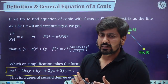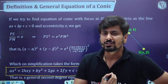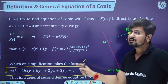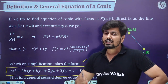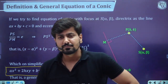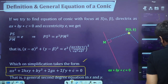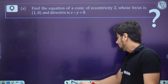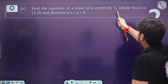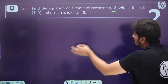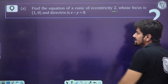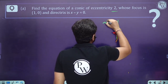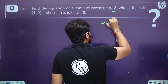For example: find the equation of a conic with eccentricity 2, focus at (1, 0), and directrix x − y = 0. The condition is SP/PM = e = 2, so SP = 2·PM. The focus S is (1, 0) and the moving point P is (x, y). SP = √[(x−1)² + y²]. PM is the distance from P to the line x − y = 0, which is |x − y| / √2.